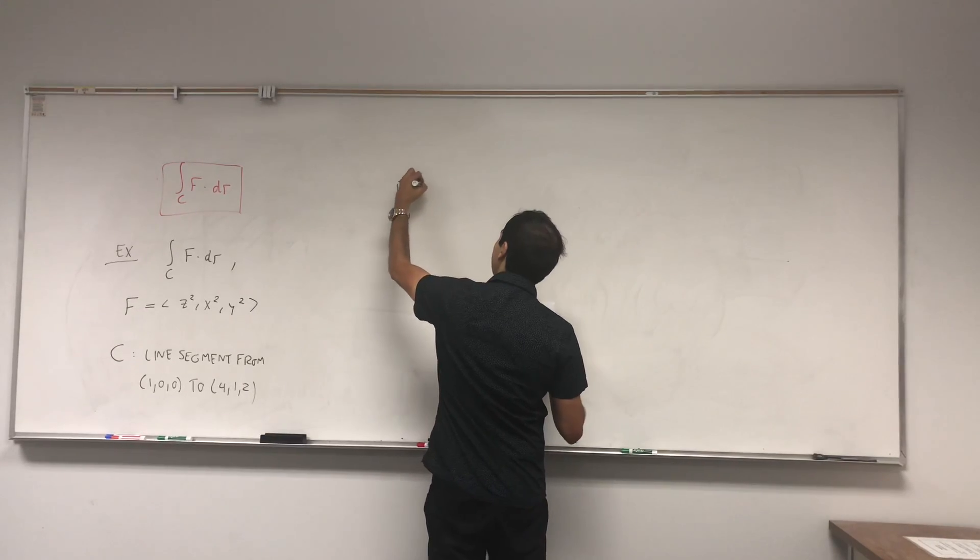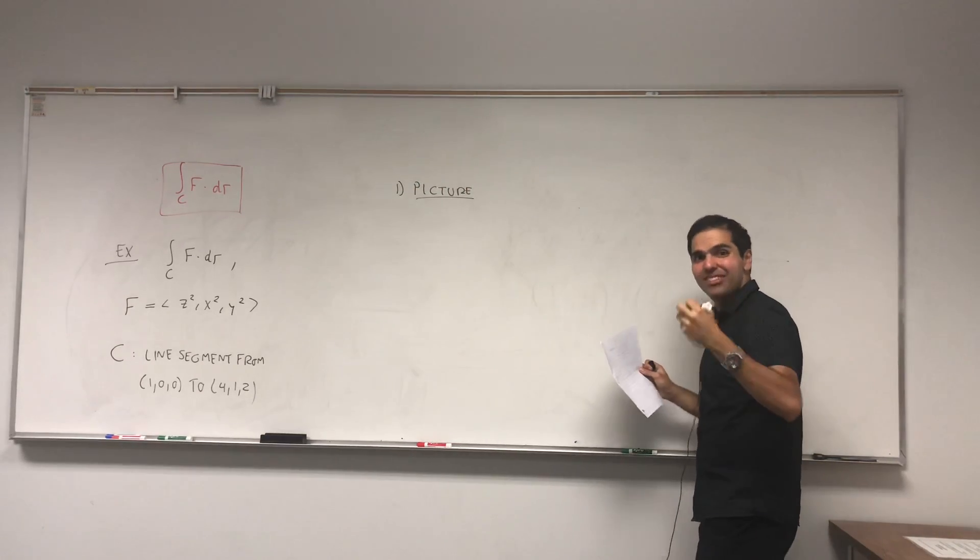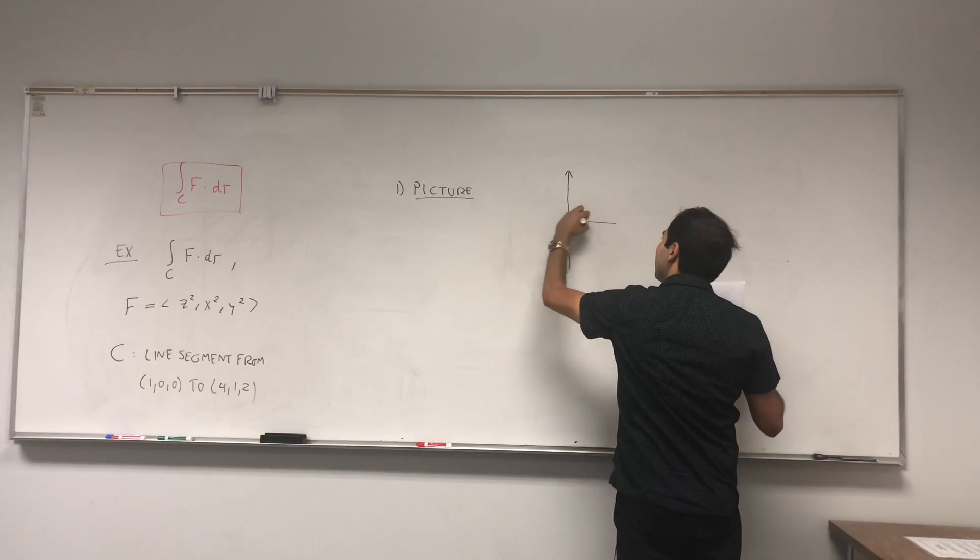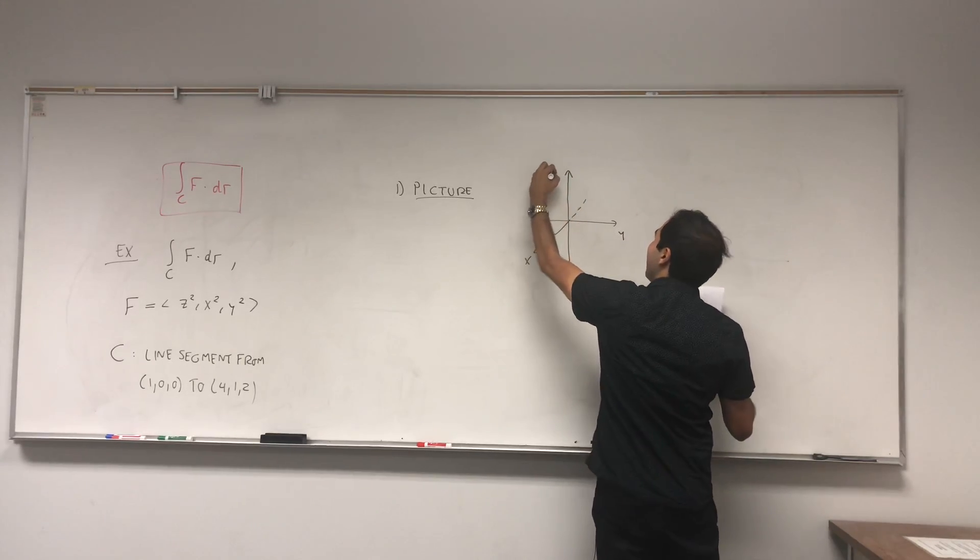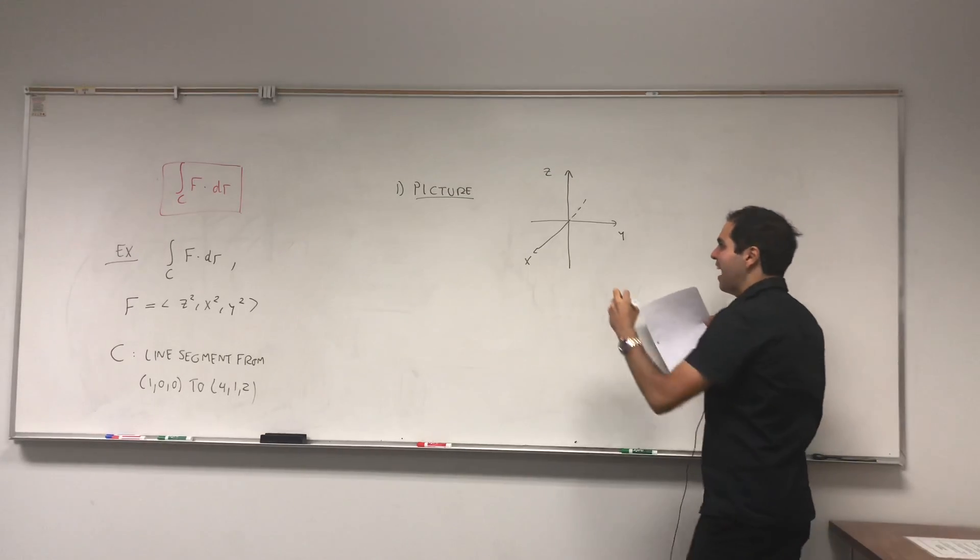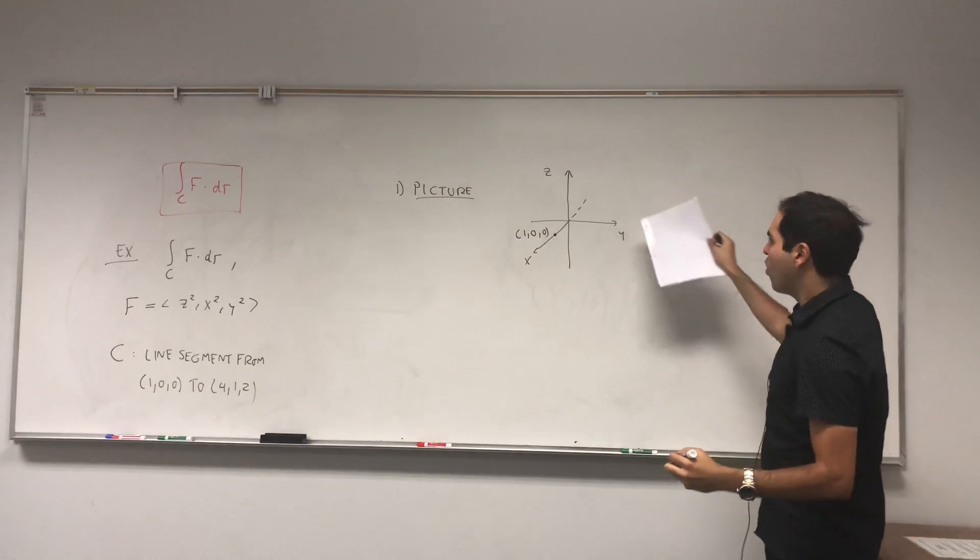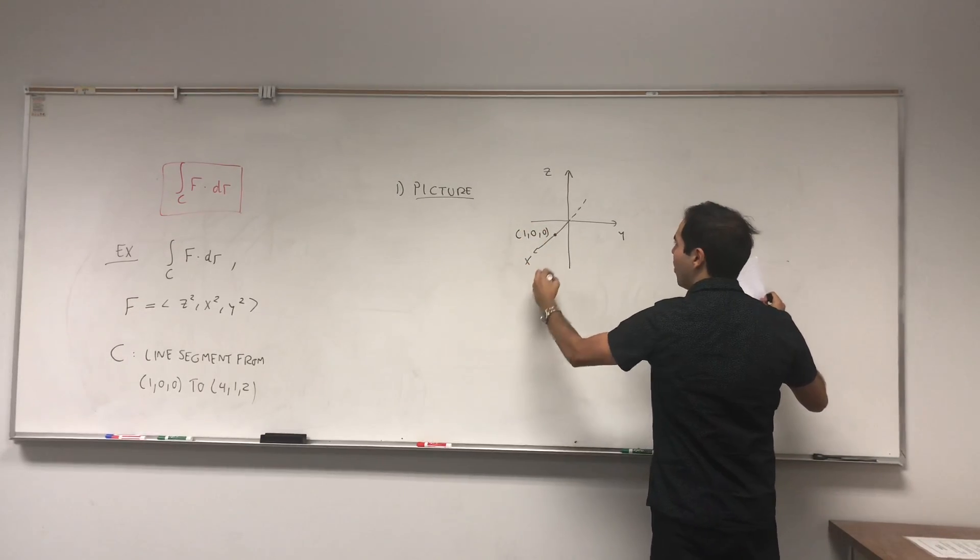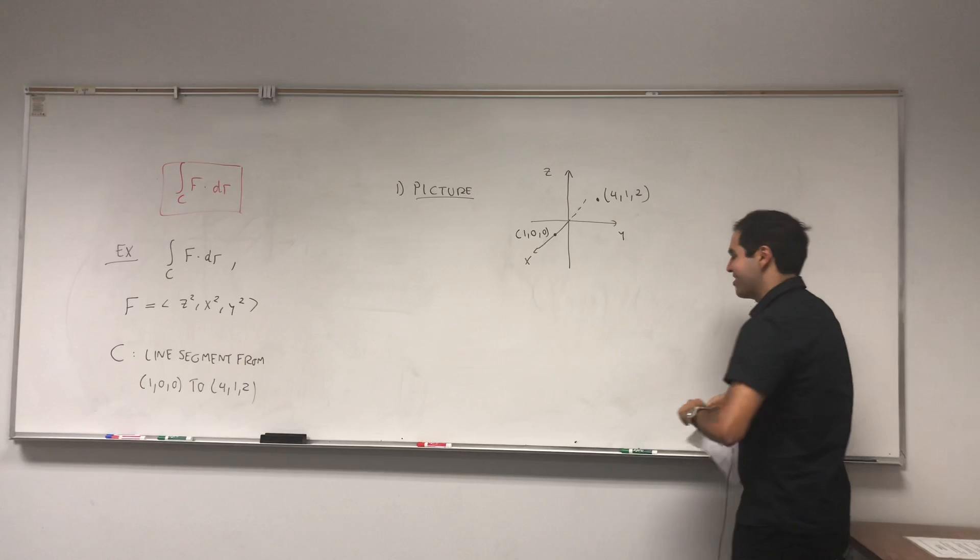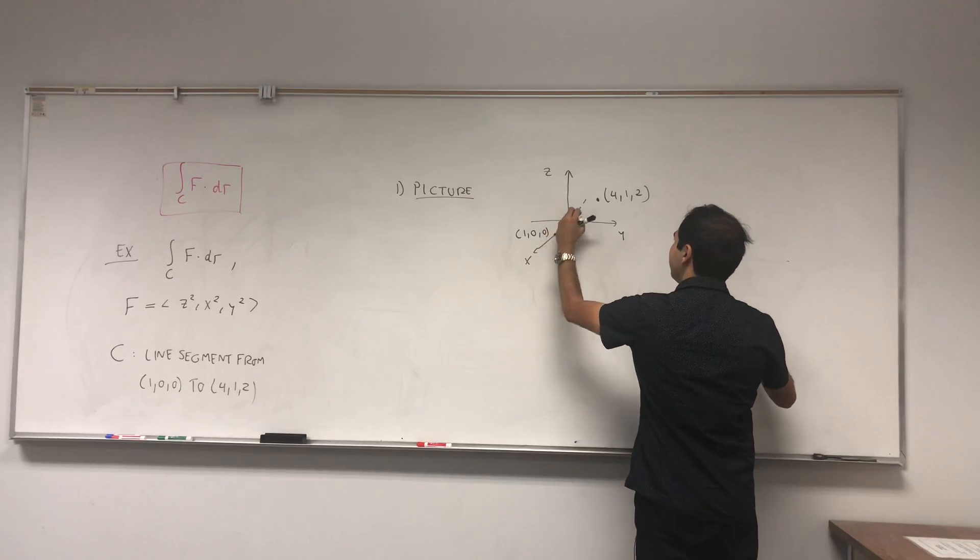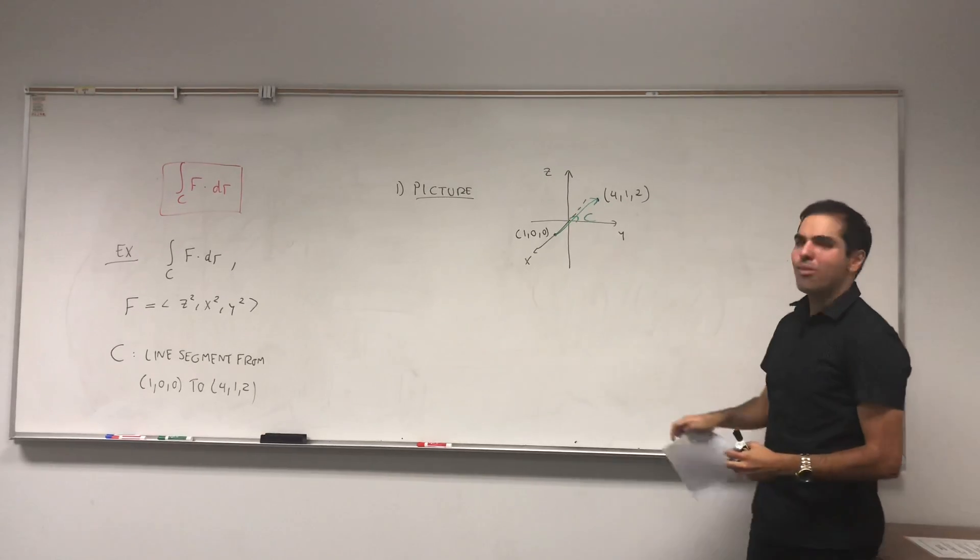So first, let's throw a little picture. I really emphasize the use of pictures in my course. It's very important because it seems like an algebraic course, but it's actually a very geometric course. I think that's what makes the class so hard. We have the line segment from (1, 0, 0), for example here, to (4, 1, 2), which maybe looks like this. Just to give a rough idea of what's going on.